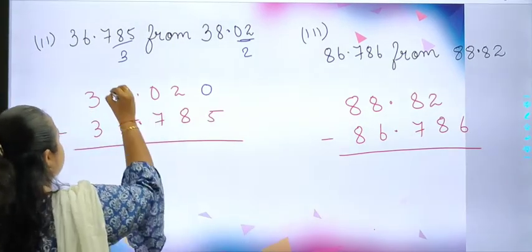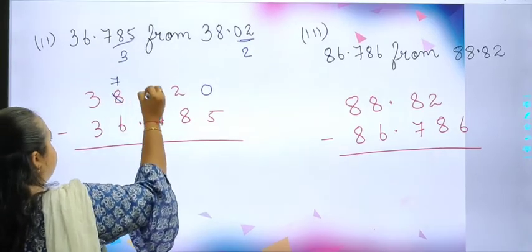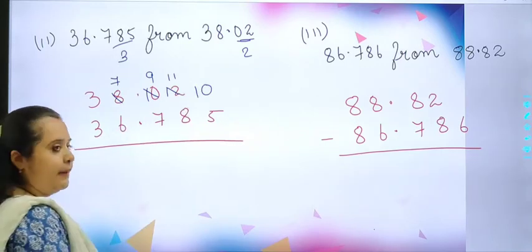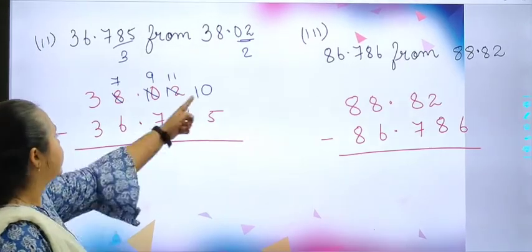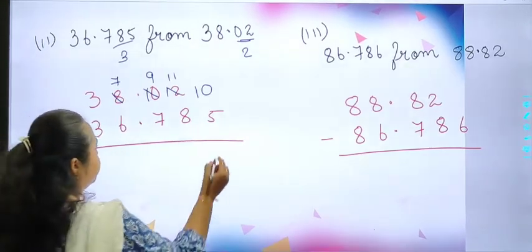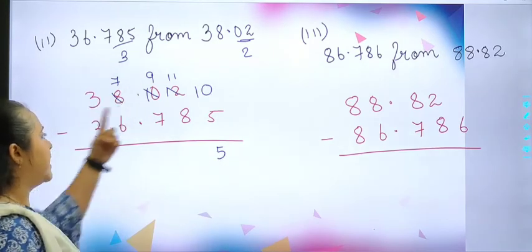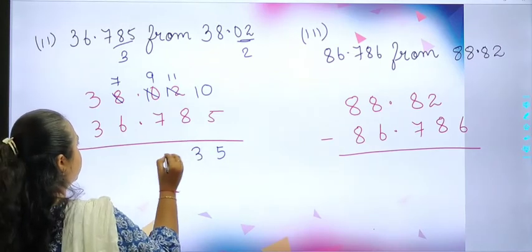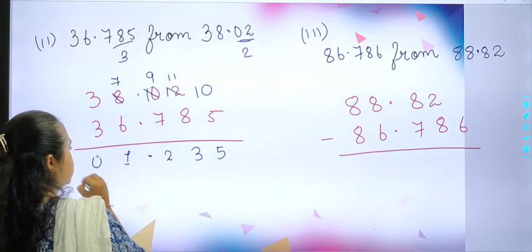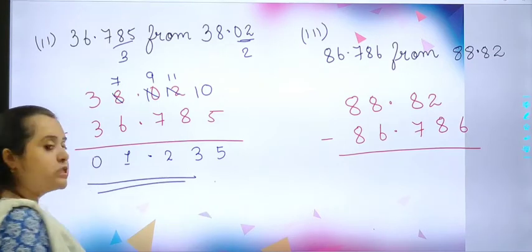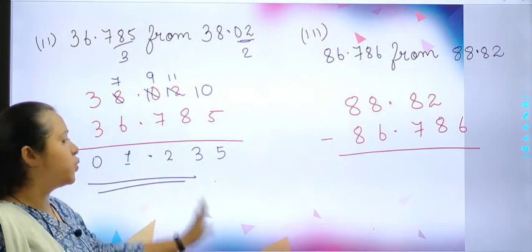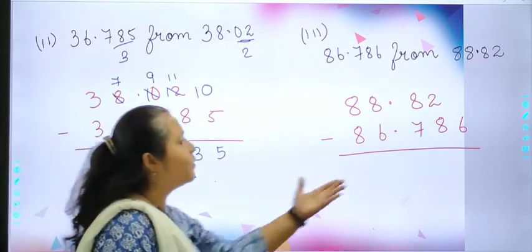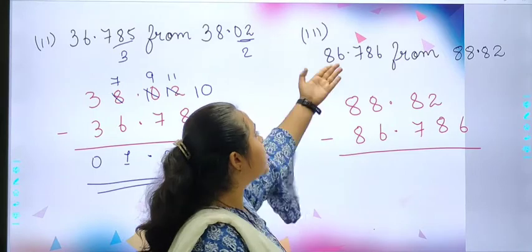This 8 will become 7, 10 will become 9. 10 minus 5 is 5, 11 minus 8 is 9, 10 level 3 is 2, 1 and 0. So your answer will be 1.235. Done. Easy.